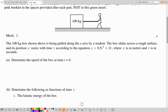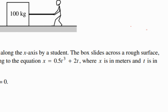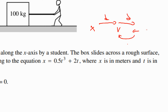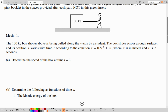Now determine the speed of the box at time t equals 0. Recall that we have three variables of motion: x, v, and a. From x to v we derive; from v to a we derive; from a to v we integrate; and from v to x we integrate as well.